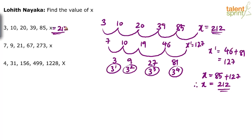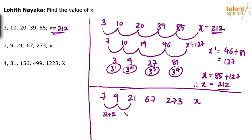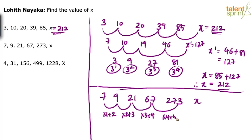Next question: 7, 9, 21, 67, 273, and question mark — what is the logic? Let's connect 7 with 9: it's like 7 × 1 + 2 = 9. 9 with 21: 9 × 2 + 3 = 21. 21 with 67: 21 × 3 + 4 = 67. There's a definite pattern: × 1 + 2, × 2 + 3, × 3 + 4, and so on.